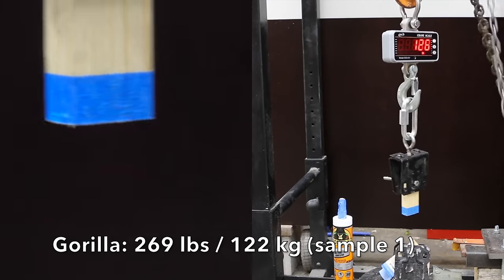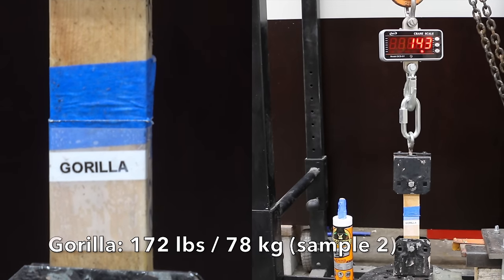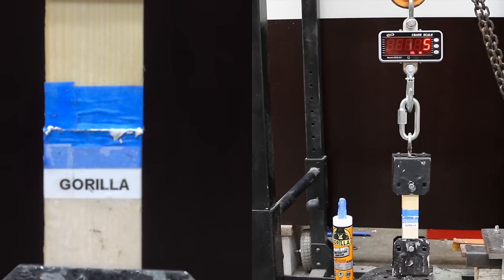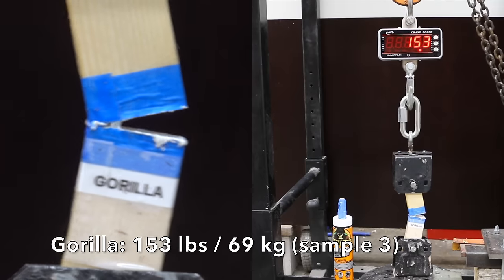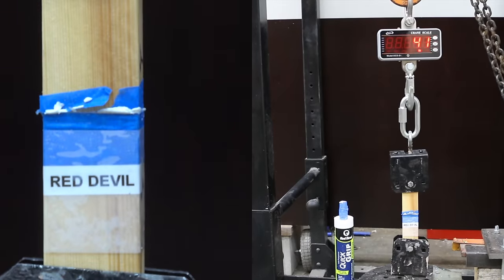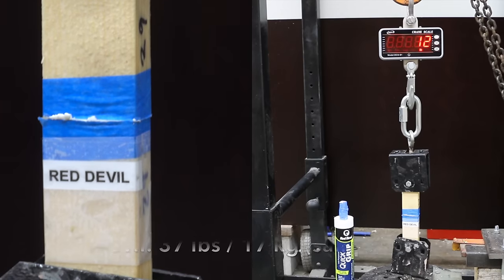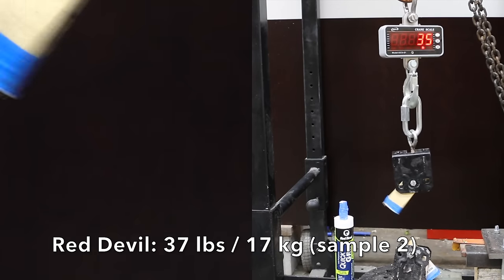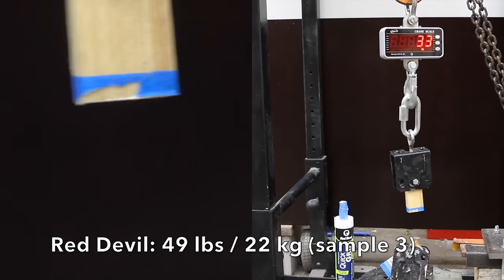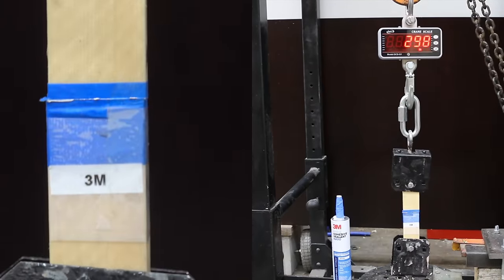Gorilla did fairly well at 269 in the first sample. The second was down some to 172. The third was down again to 153. Now Red Devil is not designed for continuous water exposure, so this is going to be interesting. The first was only 57. The second was 37. The third was only 49. The performance is not a surprise when you consider that the product is not designed for continuous water exposure.